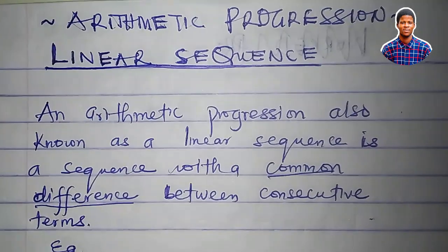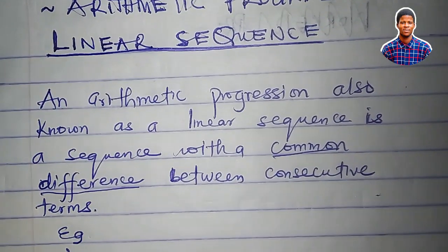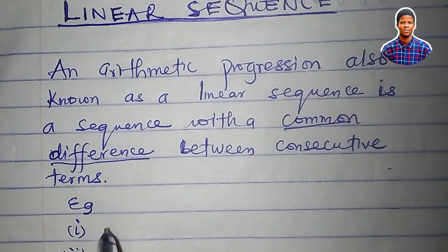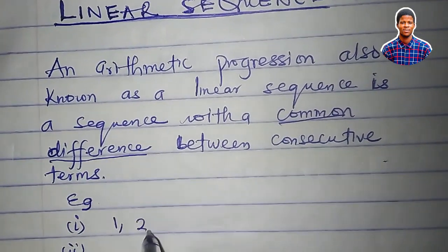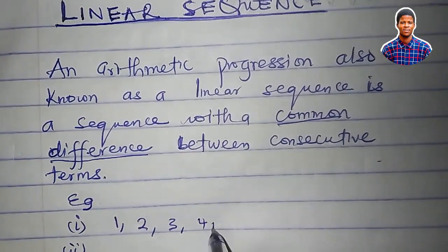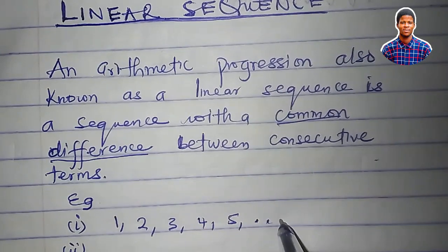An example of a linear sequence is this: one, two, three, four, five, till infinity. In this case, what would be the common difference?